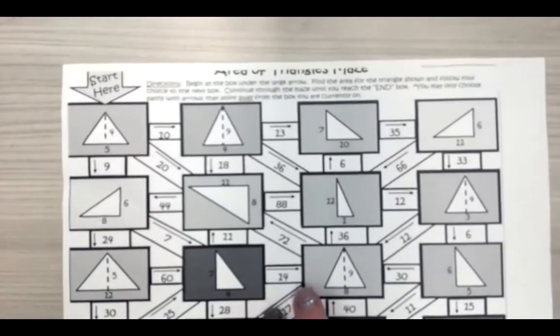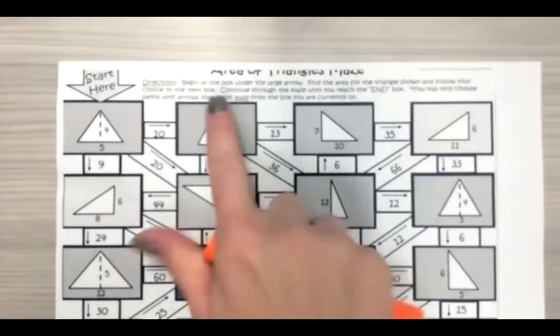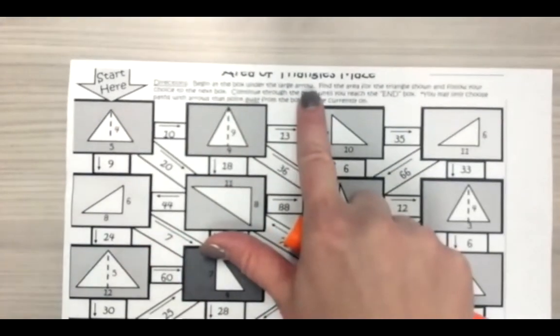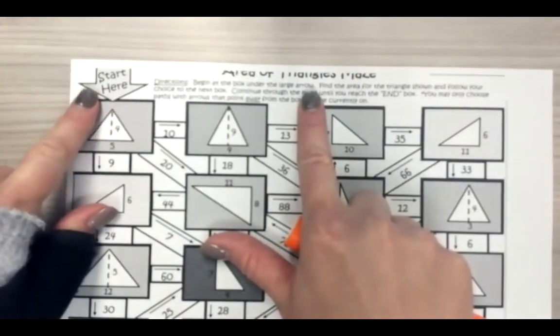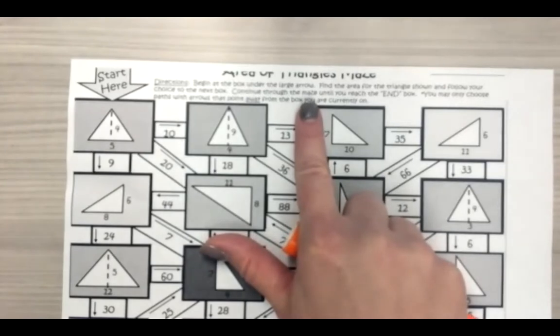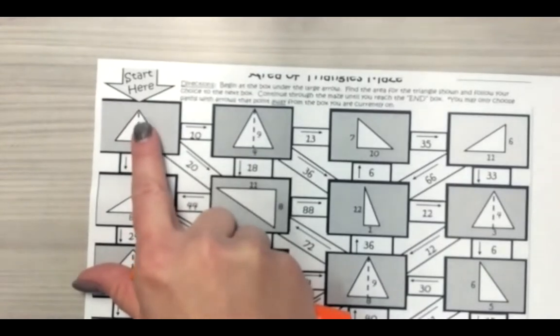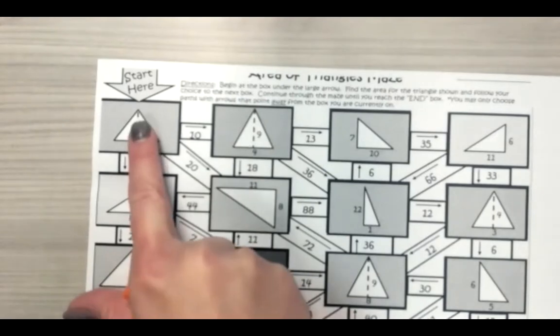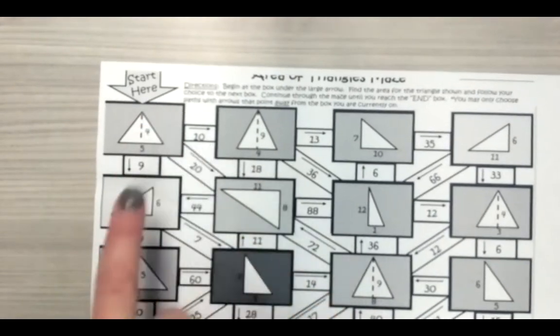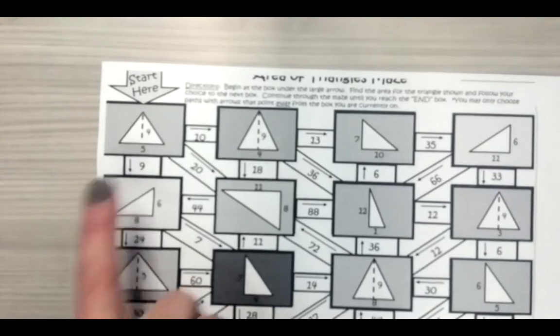Let's read the directions. They read, begin at the box under the large arrow. So here's the large arrow. Start here. Find the area for the triangle shown. All right. So I guess we need to find the area of this triangle and follow your choices to the next box. It looks like our choice answers for this box are 10, 20, and nine.